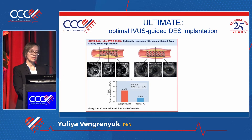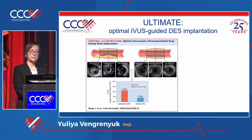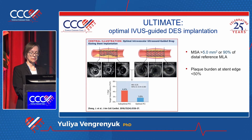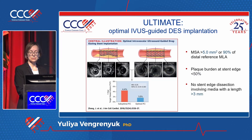The ULTIMATE trial — described by Dr. Sharma today — is a randomized trial showing benefits of IVUS guidance compared to angiography guidance. An interesting finding within the IVUS arm is that cases achieving optimal PCI had the lowest number of adverse events compared to suboptimal PCI even with IVUS guidance. Criteria for optimal PCI by IVUS: minimal stent area >5 mm², plaque burden at stent edge <50%, and no stent edge dissection involving the media or length >3 mm.